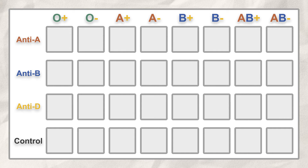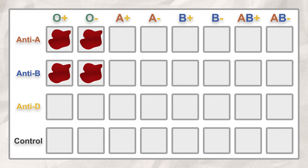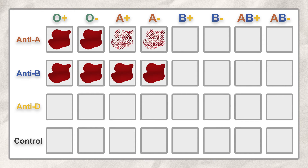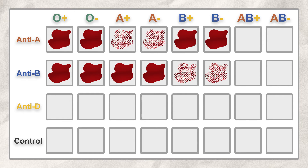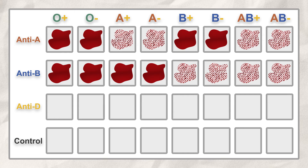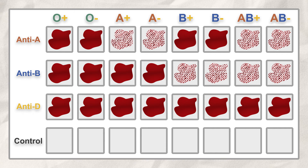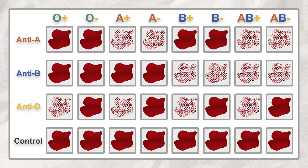Let's fill out the chart for each type. Type O does not have antigen A or B, so it won't be affected by antibody A or B. Type A cells agglutinate in field A but not B. Type B cells agglutinate in field B but not A. And type AB has both antigens, so both fields A and B start agglutinating. To determine the Rh factor, we look at field D — if the sample agglutinates, it is Rh positive; if not, then negative. And of course, everything is only valid as long as the control field stays intact.